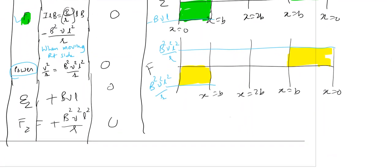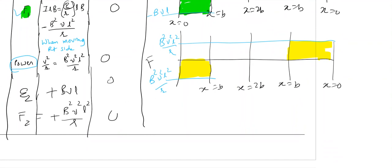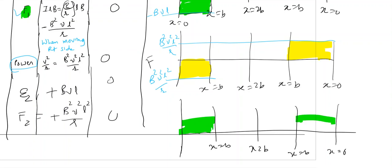And similarly, you can plot power. The only difference for power is there is no negative power. Power is always positive. This is the power earlier, same as the power. And how much is the power? Power is b²·v²·l² by r. Of course, I made mistake. It's not v². It's simply b. So b·v·l² by r.